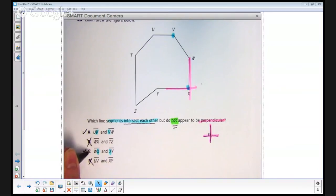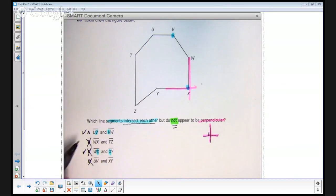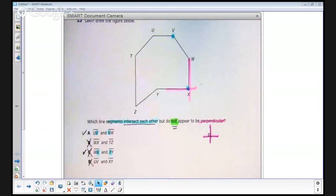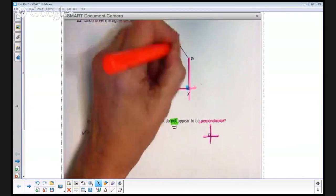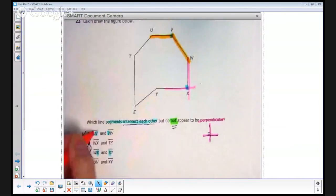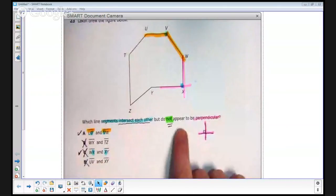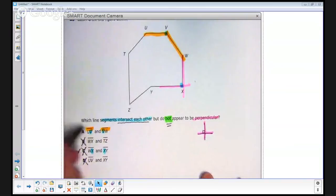Which means the two that I want are UV and VW. They do intersect, UV and VW. Let me get a third color here. I'll do orange. UV and VW, they do intersect and they do not appear to be perpendicular. So I'm going to choose answer choice A.